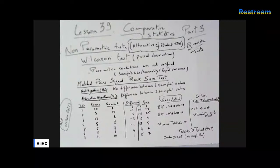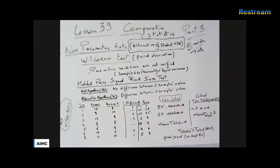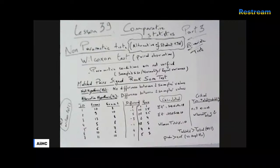When the conditions of parametric comparative statistics are not verified, we use non-parametric tests — mainly the Wilcoxon test for paired observations. The conditions to recall are: sample size preferably over 30, normality of distribution, and equal variances between two samples. These are the three conditions required to use the parametric Student t-test; otherwise we use the non-parametric alternative.